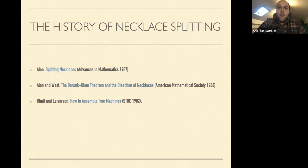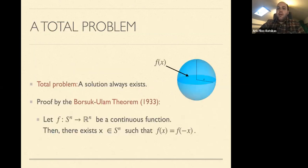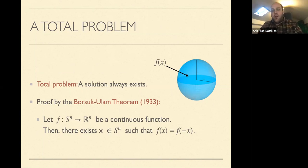I believe the name 'necklace splitting' originated in an earlier paper in 1982, and if we look for slightly different versions of this problem we go back to the 1960s and even the 1940s. What makes this problem particularly interesting is that it is a total problem — a solution always exists regardless of how you place the beads. You can always find a solution satisfying the constraints, and the proof goes via the well-known Borsuk-Ulam theorem.